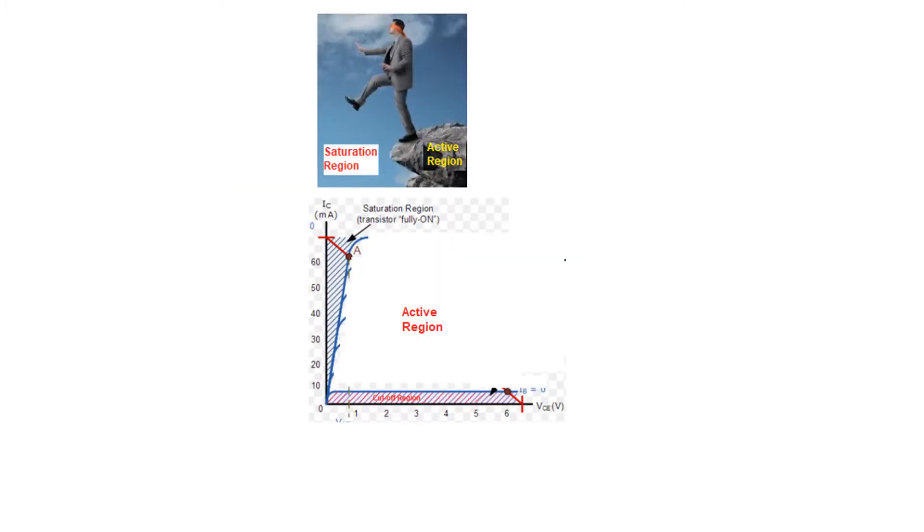Now if you go through the characteristics diagram, we know there are three regions. This is the saturation region, this is active region, and this is the cutoff region. We are primarily concerned about this and the edge is this area. This is the edge of end of active region and beginning of saturation region we can say.